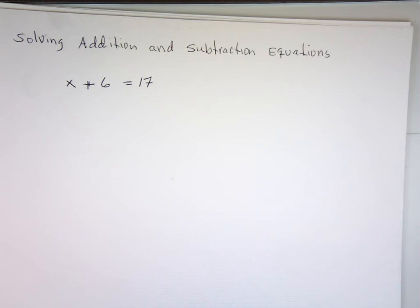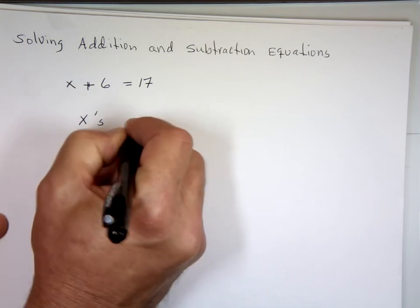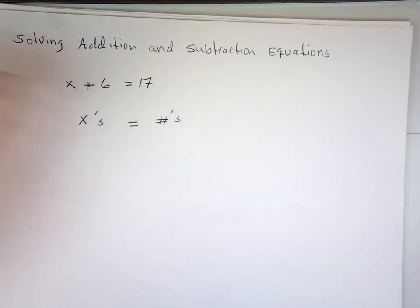When you solve an equation, your goal is simple. You want to have all the x's on one side, or the variables on one side, and you want to have all the numbers on the opposite side. That's really what your goal is. All the x's on one side, all the numbers on the opposite side.